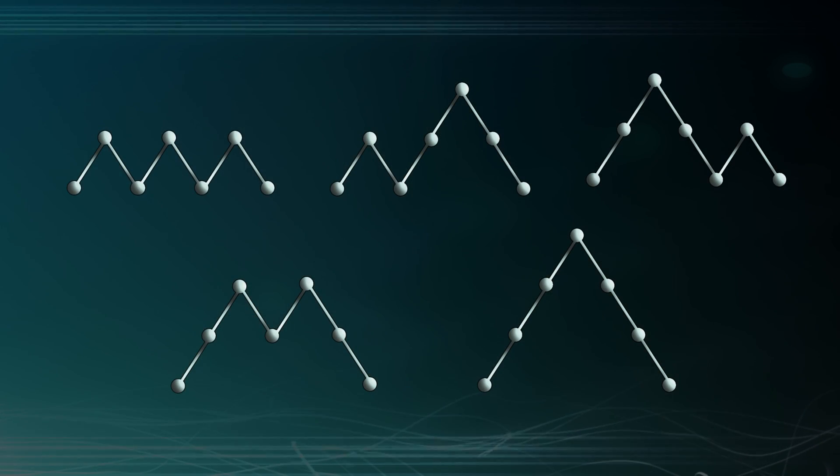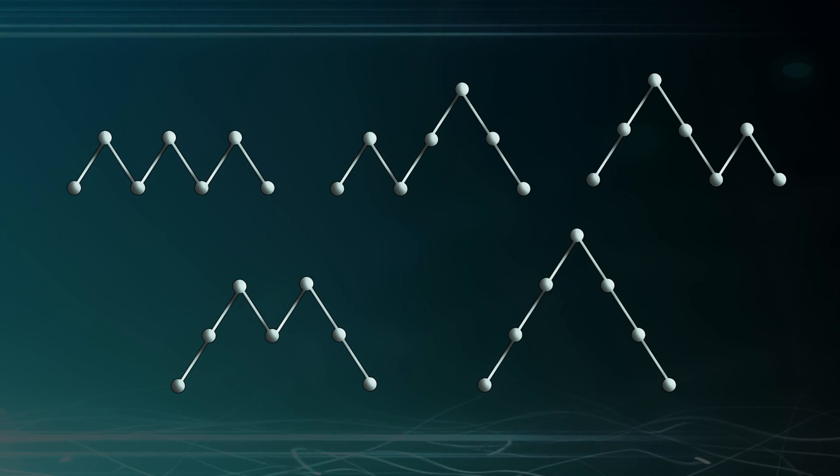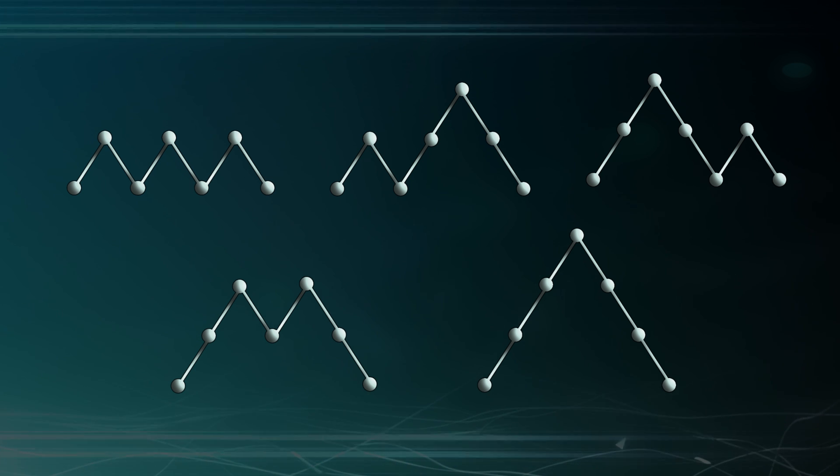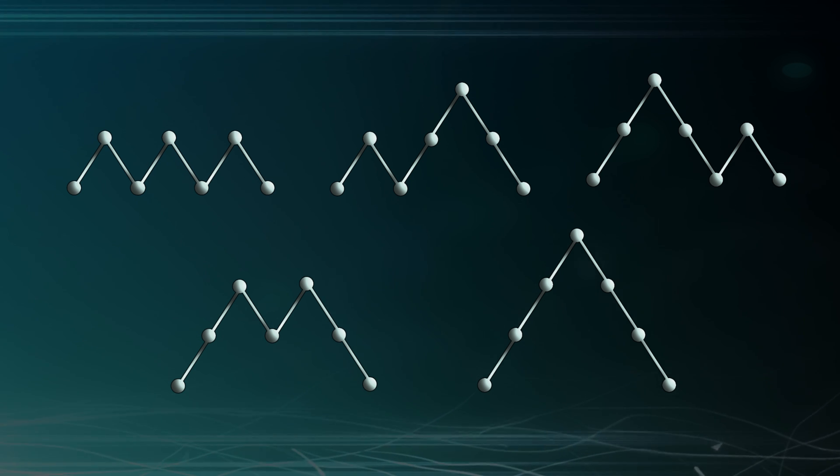Finally, if we allow ourselves three upstrokes and three downstrokes, a bit of scribbling on a piece of paper will reveal that we have five ways of drawing those mountain ranges.